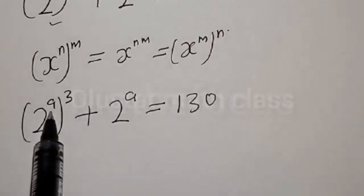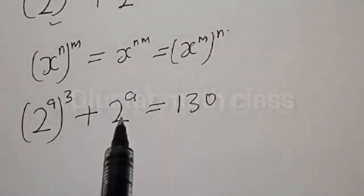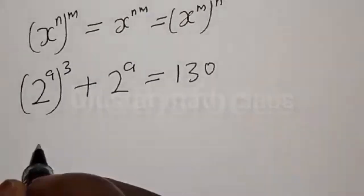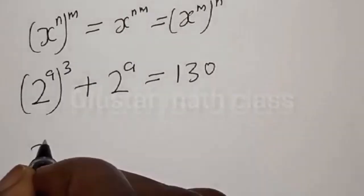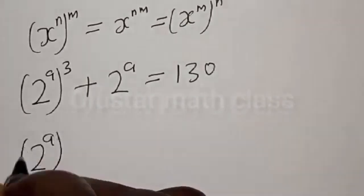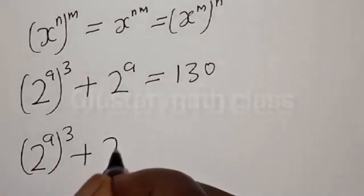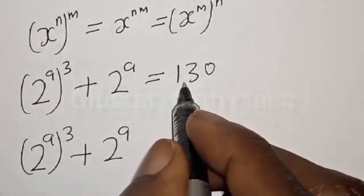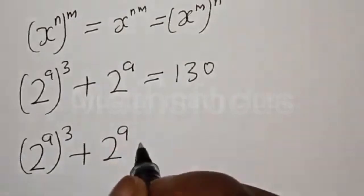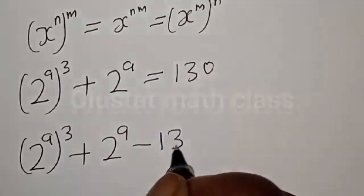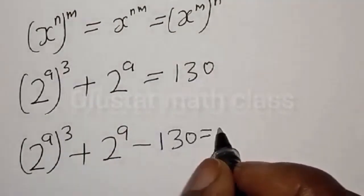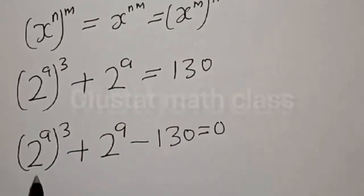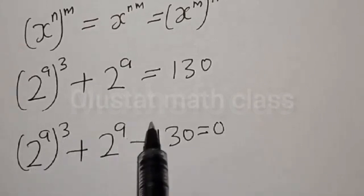From here we have 2 raised to power a cubed plus 2 raised to power a is equal to 130. Then we have 2 raised to power a cubed plus 2 raised to power a minus 130 is equal to 0.